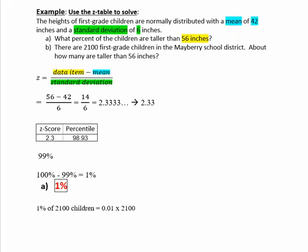And when we multiply, that gives us about 21 children, actually exactly 21 children, but remember we rounded this, so we'd have to say it's about 21 children.